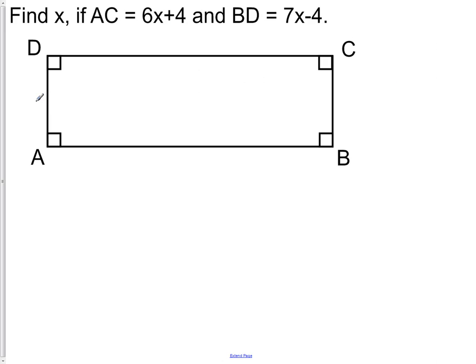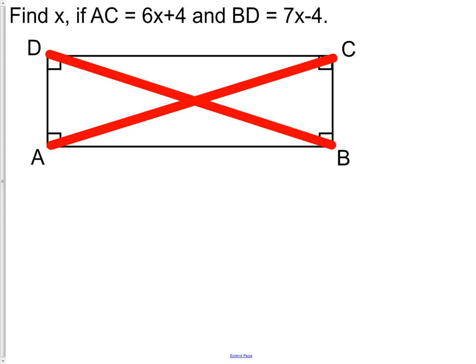Okay, on to a question. It says, find X if we know AC is 6X plus 4, and we know BD is 7X minus 4. So the first thing to do would be to draw those objects onto the picture so we know what we're actually talking about. So we're talking about AC, which is this piece right here, and BD, which is this piece right here.